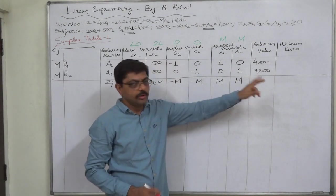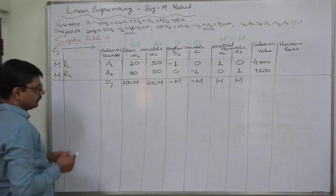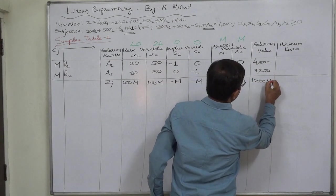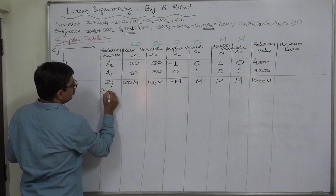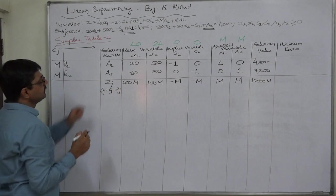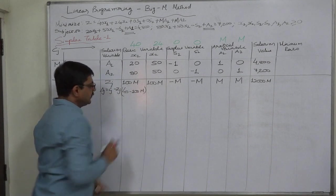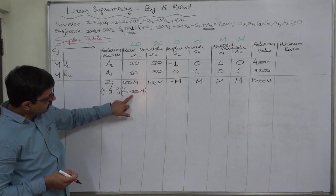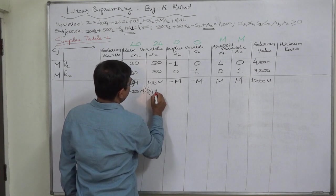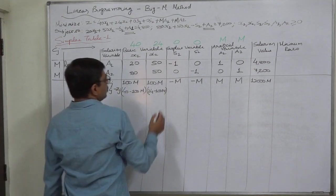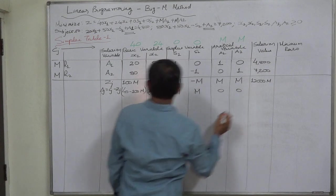We are not going to write the zj value in the solution value column until we arrive at the optimal solution, since it would be complex with M in it. If we did, it would be 12000M (i.e., 4800M + 7200M). Now the delta j values (cj − zj): for x1 it is 40 − 100M; for x2 it is 24 − 100M; for s1 it is 0 − (−M) = +M; for s2 it is +M; for a1 it is M − M = 0; for a2 it is M − M = 0.